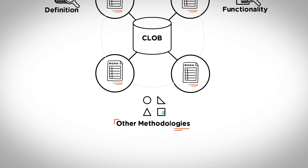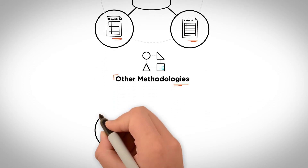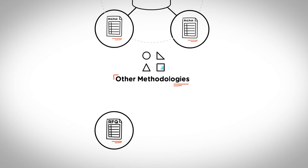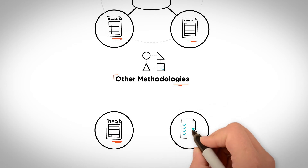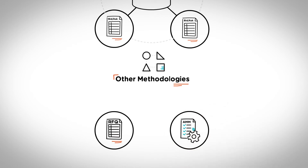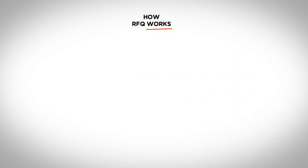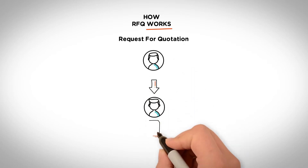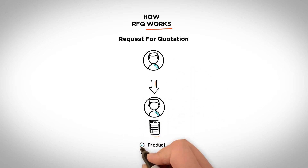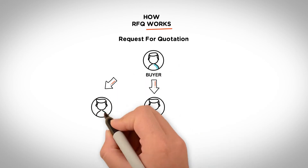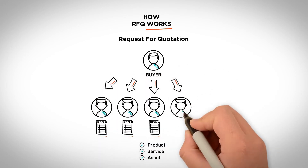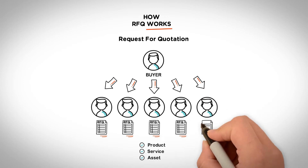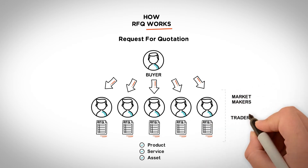Aside from a central limit order book, exchanges have adopted other methodologies as well, including RFQ and AMM. Request for Quotation, just like in business, is simply asking someone for a price on a product, service, or an asset. In other words, it can be a form of price comparison whereby a buyer requests quotes from multiple market makers and trades with the best one.